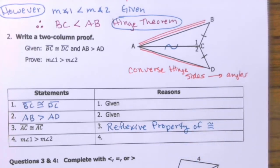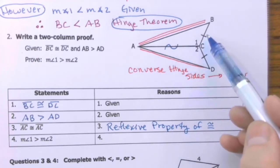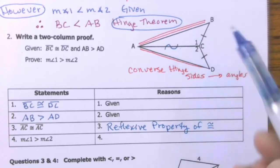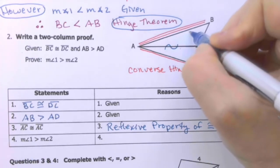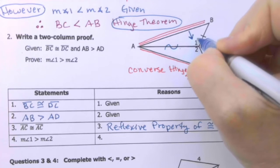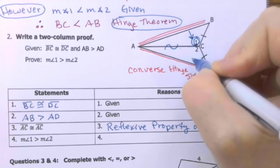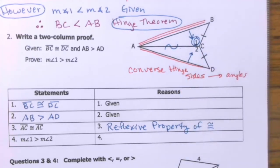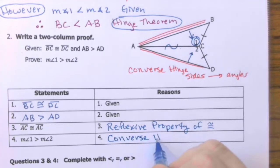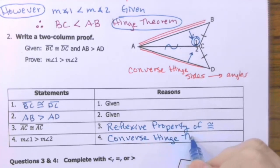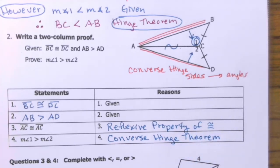Now that we know two sides are the same, we can conclude that angle 1 is greater than angle 2, because angle 1 is opposite the bigger side and angle 2 is opposite the smaller side. The reason is the converse hinge theorem. And that's the proof — pretty simple.